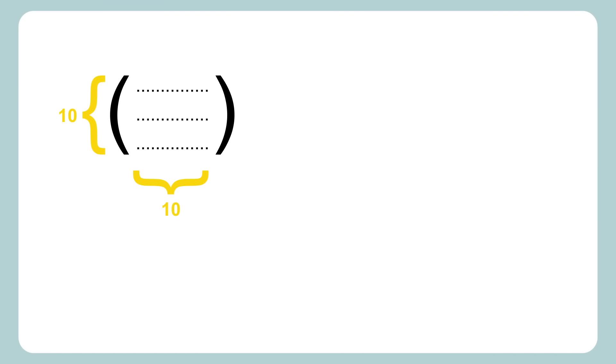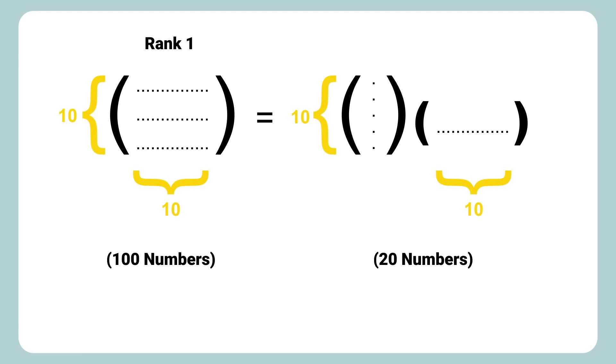If we had a 10 by 10 rank one matrix, we could write it as a 10 by one matrix times a one by 10. So in this case, we go from 100 numbers to 20. Again, 10 times 10 to 10 plus 10.